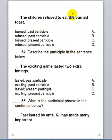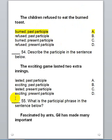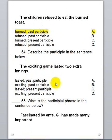Number 54: 'The exciting game lasted two extra innings.' Our participle here is 'exciting,' and it is a present participle.